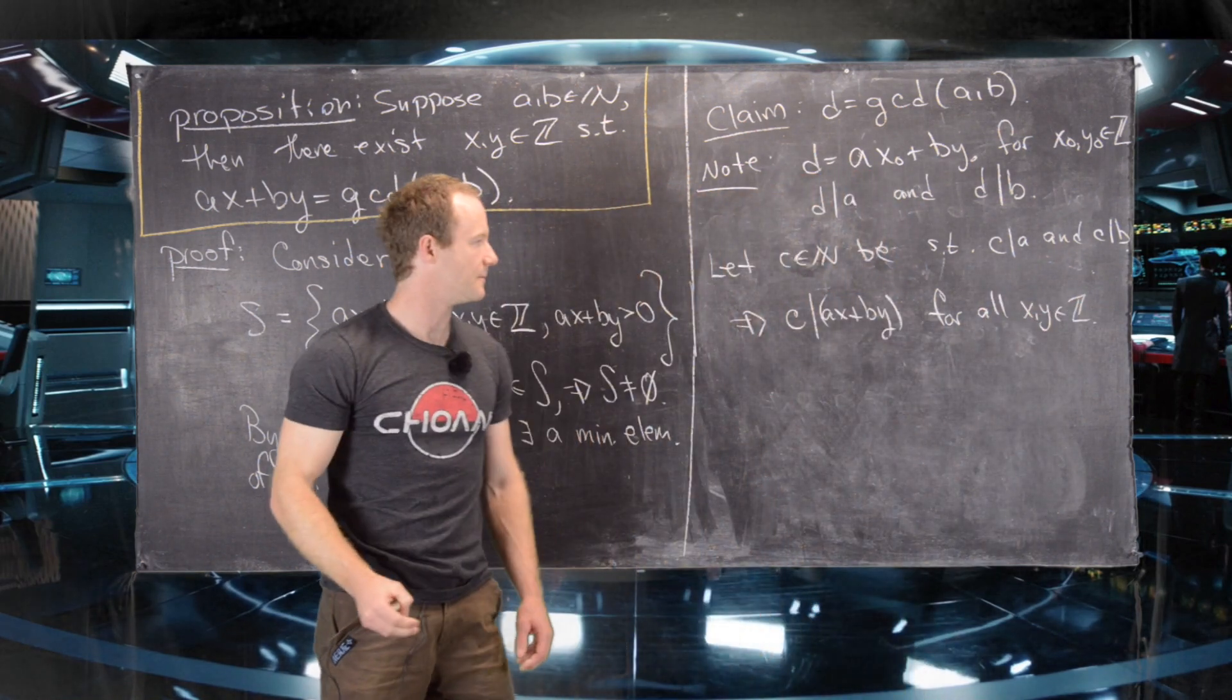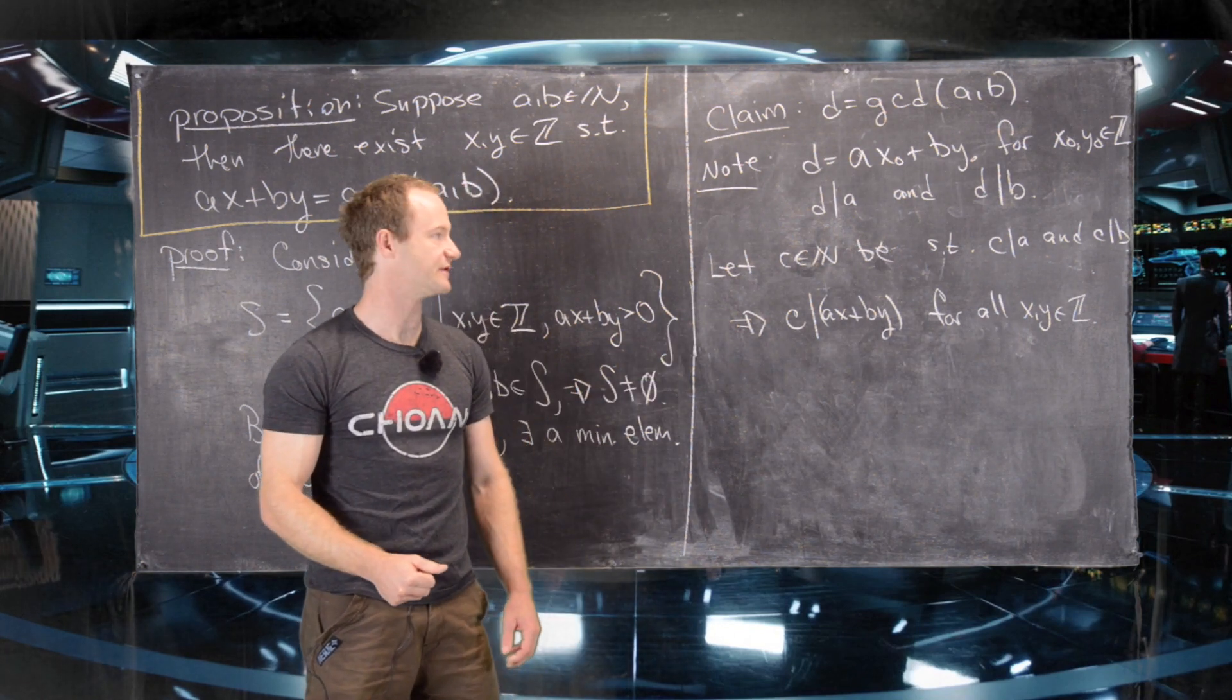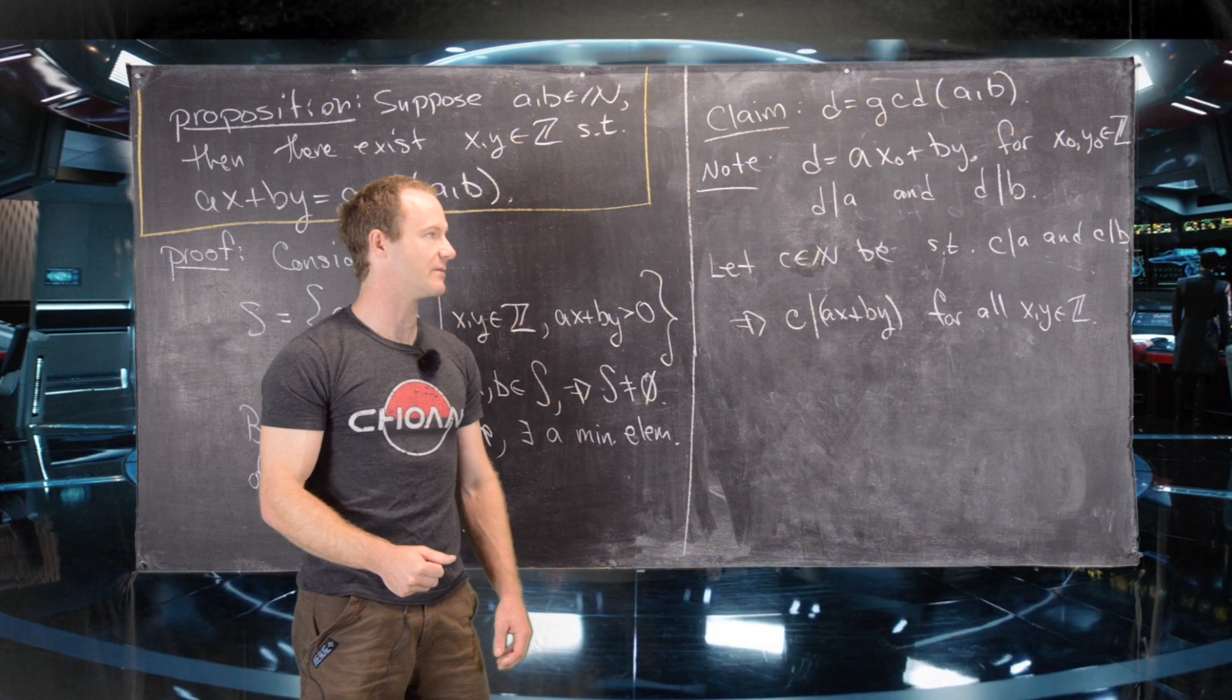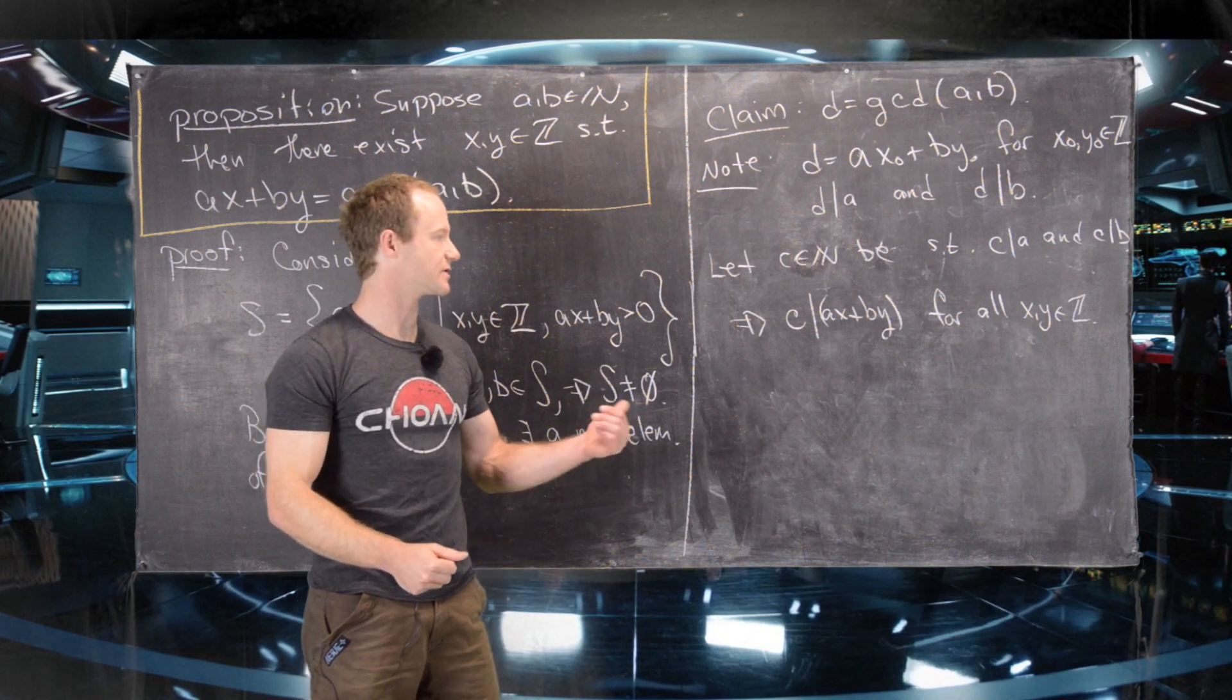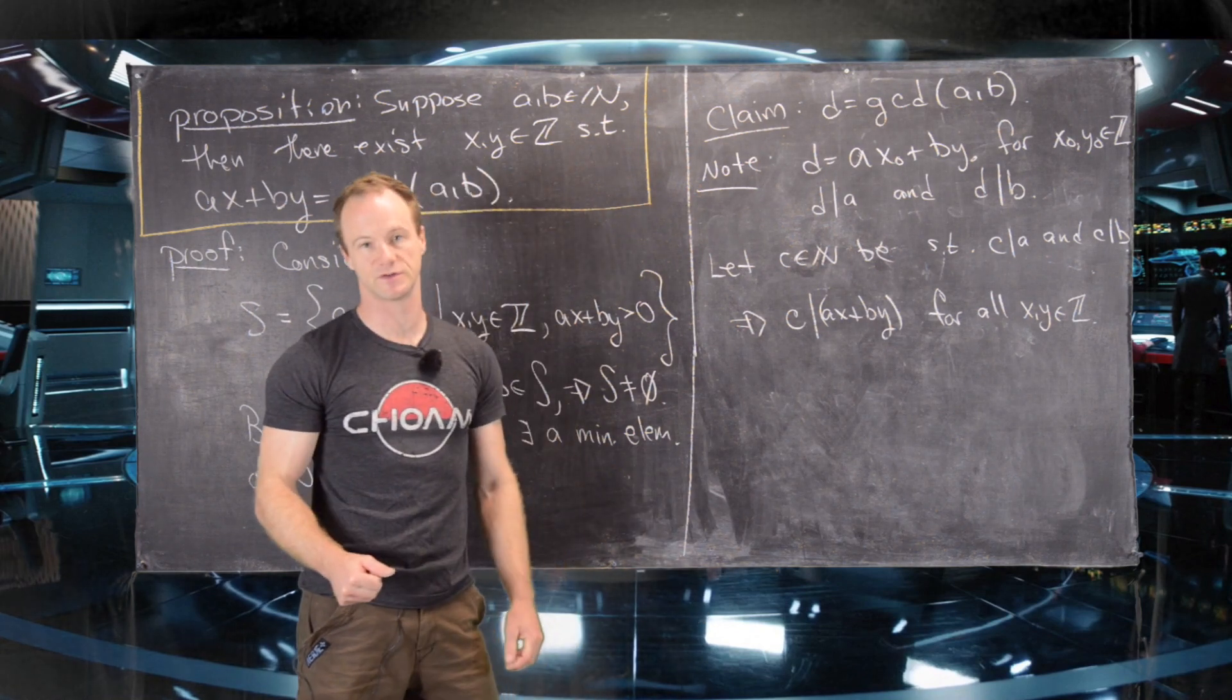that means that C divides AX plus BY for all X and Y in the integers. And so that's an easy result that's just built off of the definition of divisibility. So if you have a number that divides two numbers, so C dividing A and B, it divides any linear combination of those two numbers.